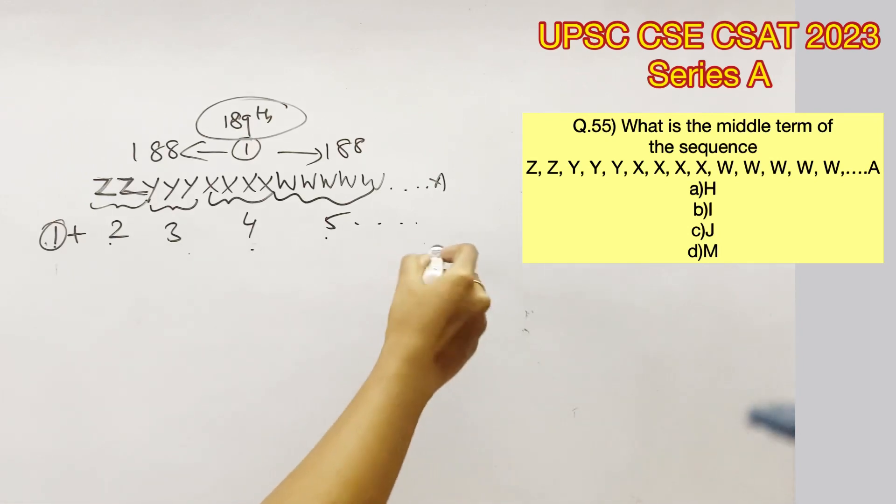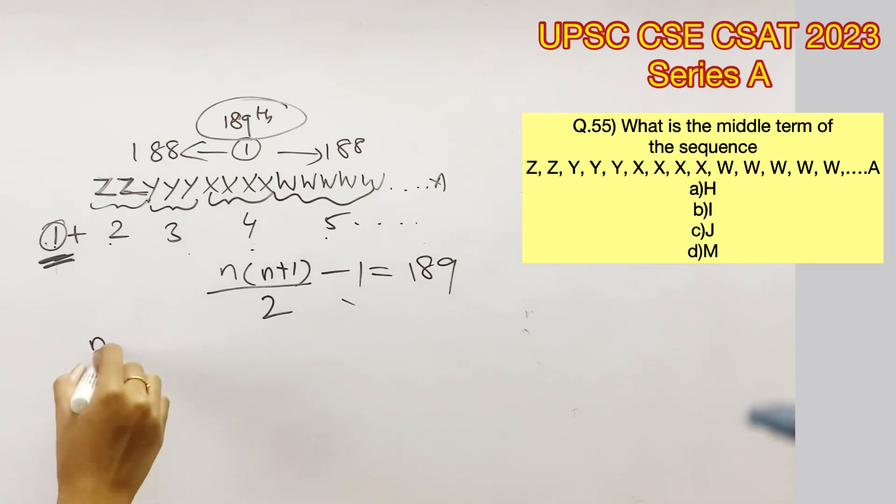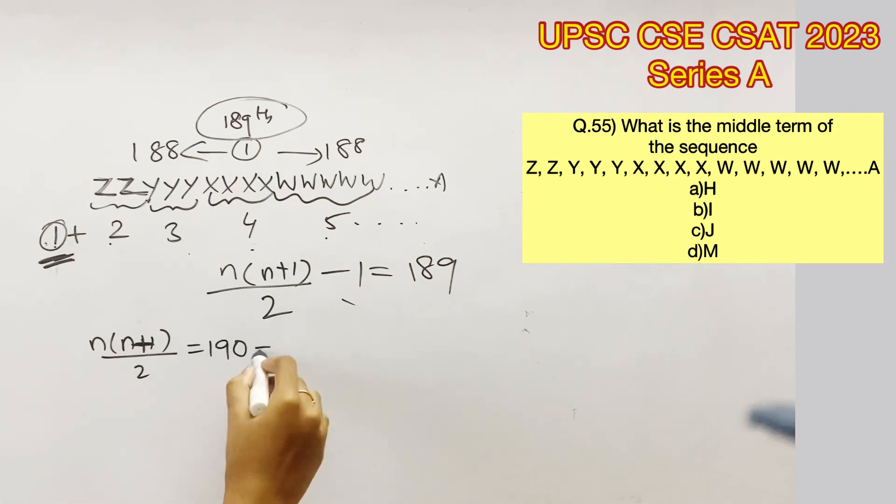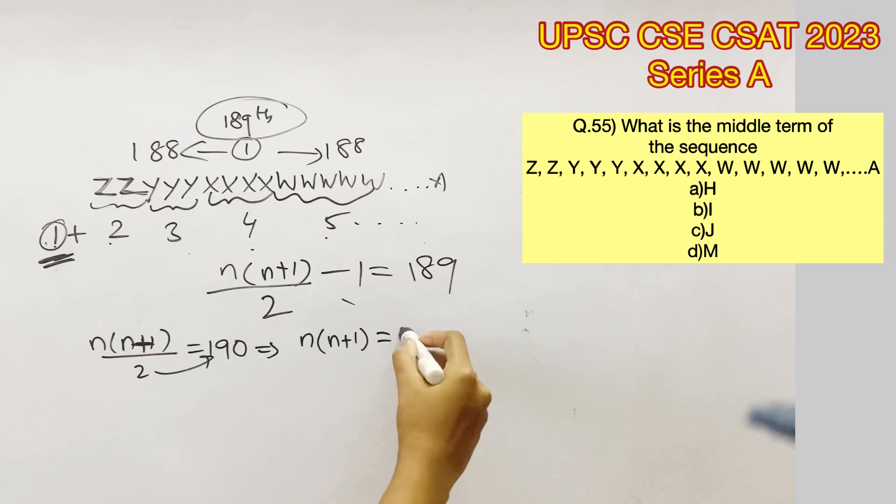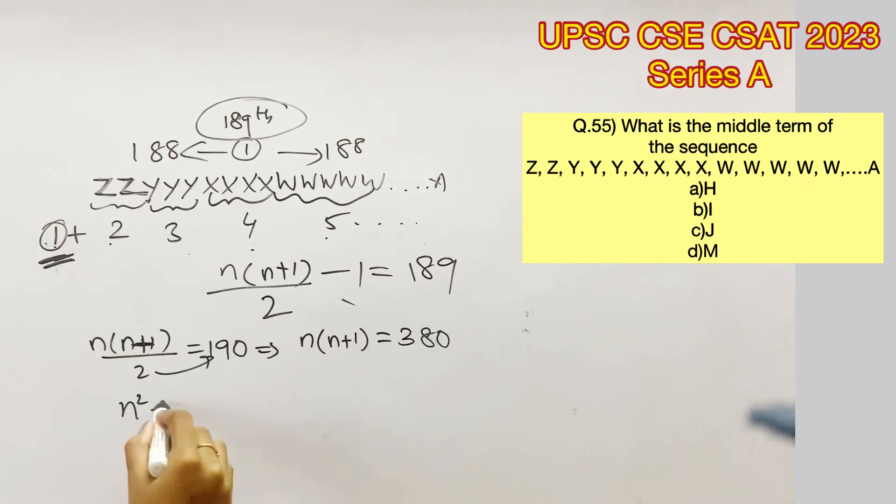We will have to add these up until we get a sum of 189. It is important to remember that we added this 1 on purpose just to make it easy for us to use the formula N into N plus 1 by 2. Therefore, subtract 1 from that formula. Solving these, we get N into N plus 1 by 2 equals 190, N into N plus 1 equals 380, and the quadratic equation N square plus N minus 380 equals 0.